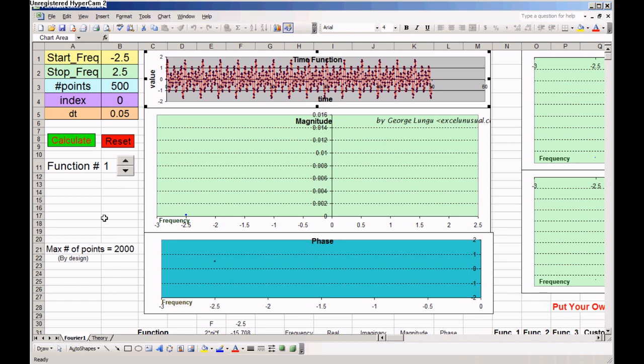This is a Fourier transform calculator in Excel. It has five charts. The first chart contains the input function in the time domain.